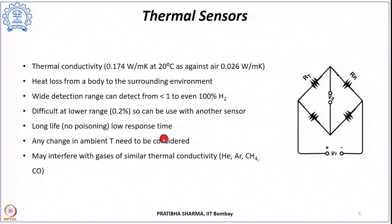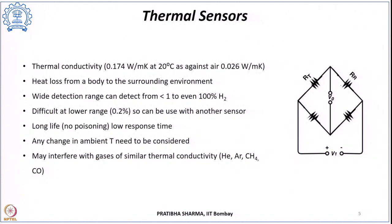The disadvantage is that any change in ambient temperature must be corrected for. Additionally, interference can occur from other gases with similar thermal conductivity to hydrogen, such as helium, argon, methane, or carbon monoxide, which is the major disadvantage of thermal sensors.